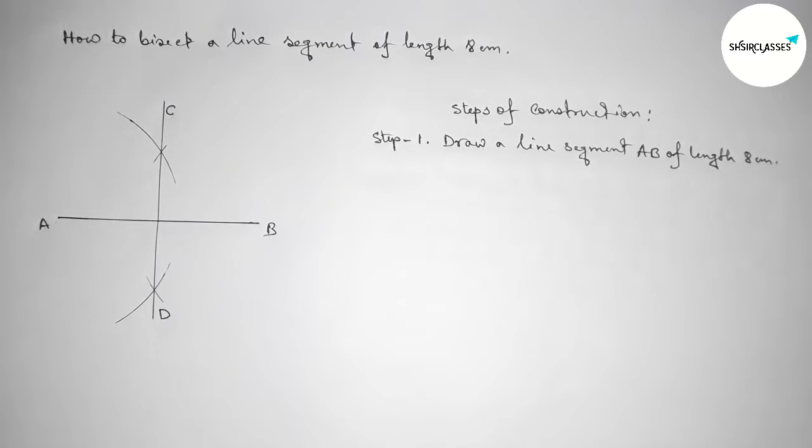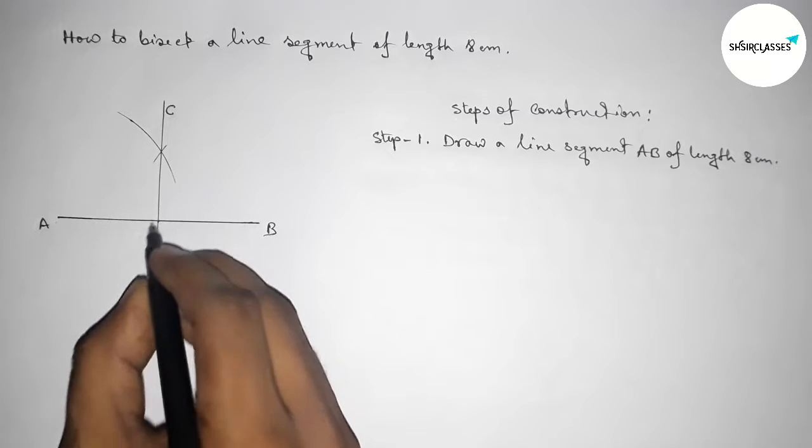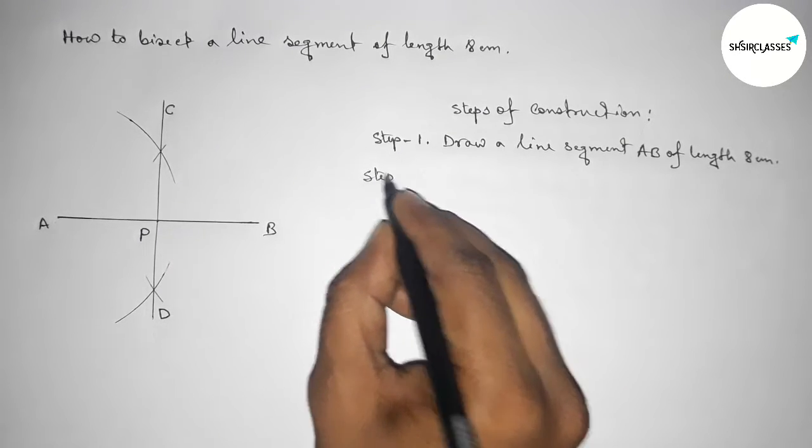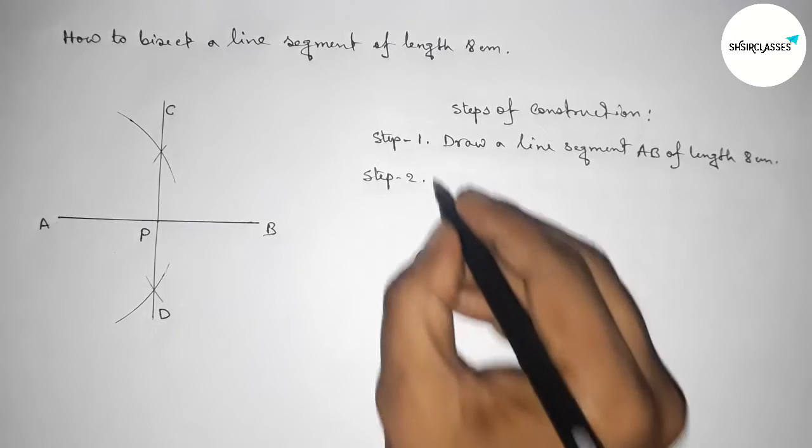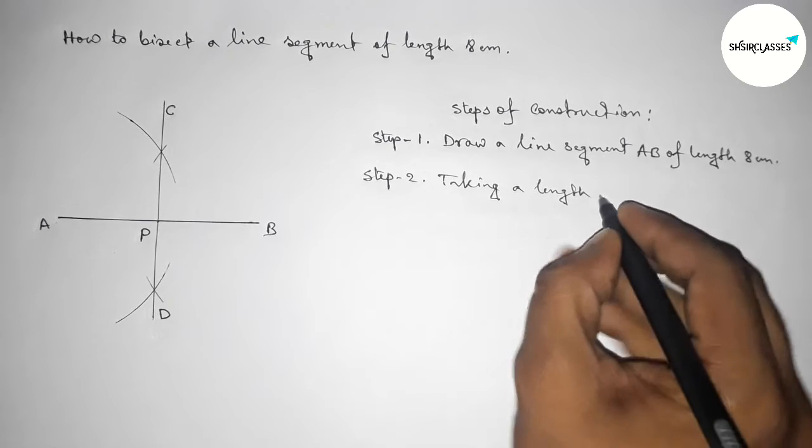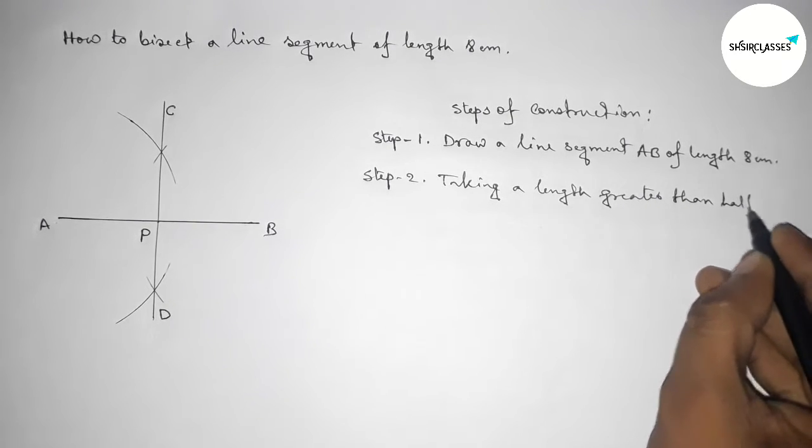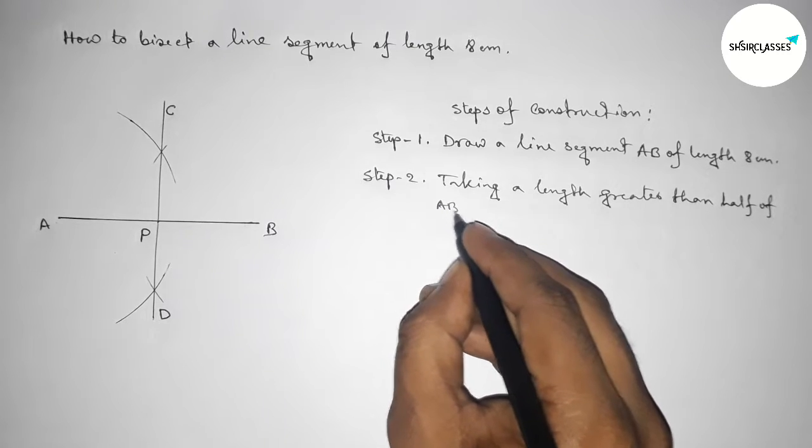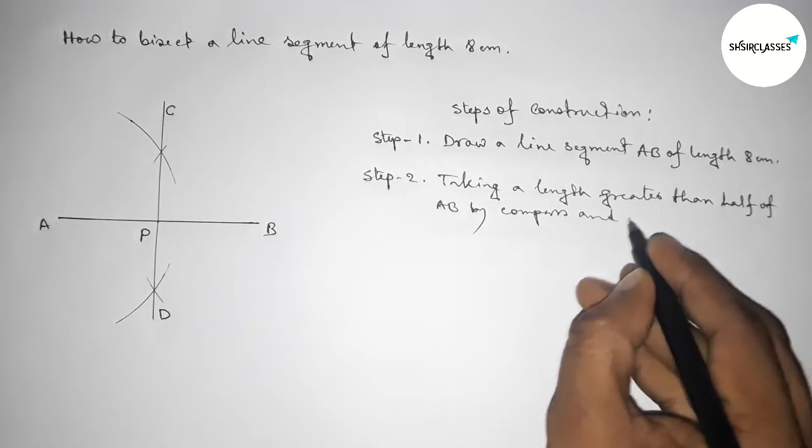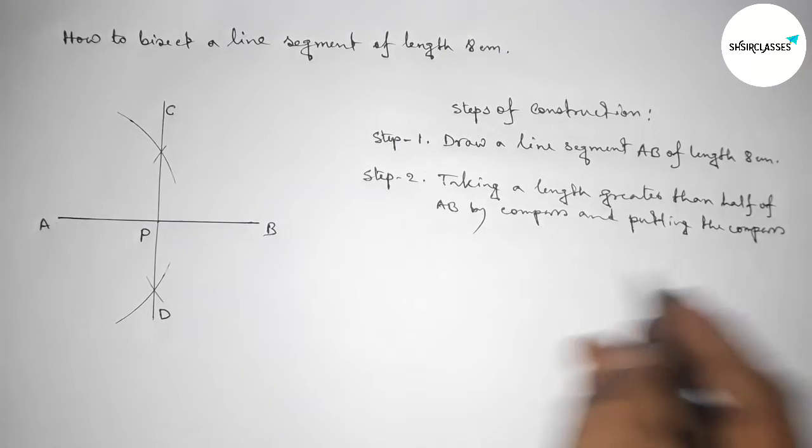D. So the line CD bisects the line AB here at the point P. So step number two: first taking a length greater than half of AB by compass, and putting the compass on the point A and B.